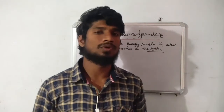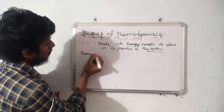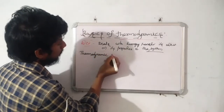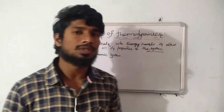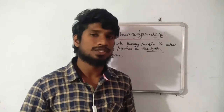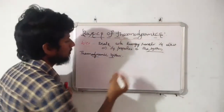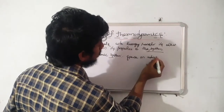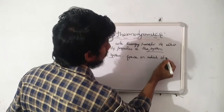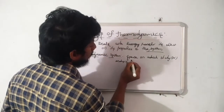When we are going to discuss about the basics of thermodynamics, first we start with the thermodynamic system. What is the thermodynamic system? The thermodynamic system, simply called our system, is the specified space on which study or analysis is to be carried out. That is called the thermodynamic system.